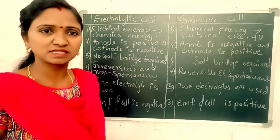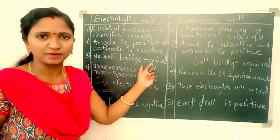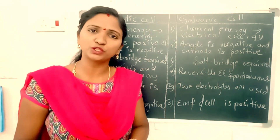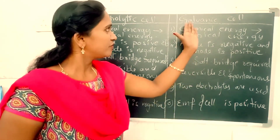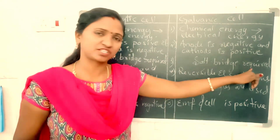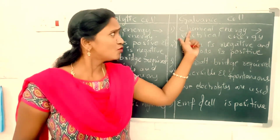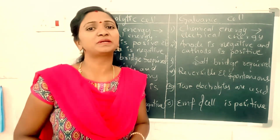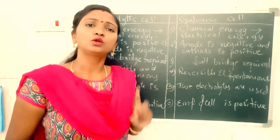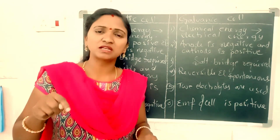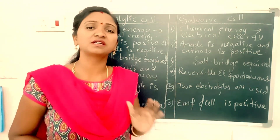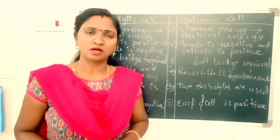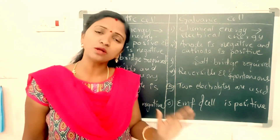The third difference: in the case of electrolytic cell, there is no salt bridge required. But galvanic cell requires a salt bridge. While a galvanic cell contains two half cells, those two half cells are connected through an inverted U-shaped salt bridge to allow electrons and matter to transmit between them. Electrolytic cell does not require a salt bridge or porous pot, but galvanic cell requires a salt bridge or porous pot.